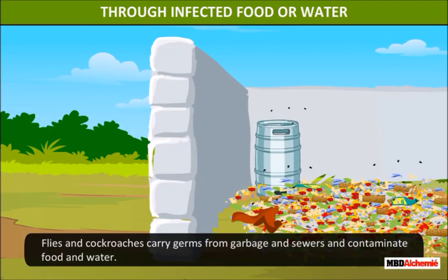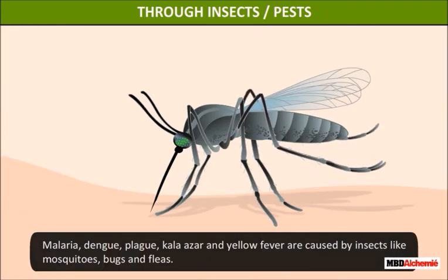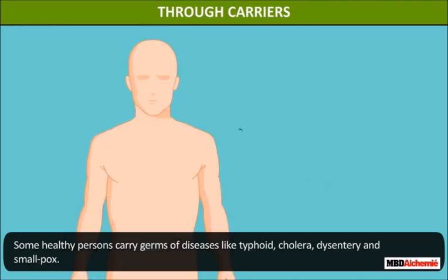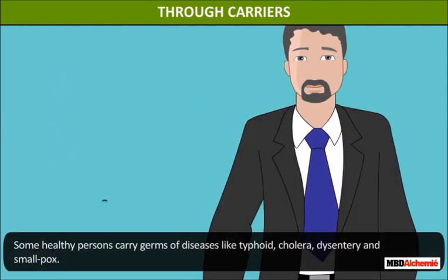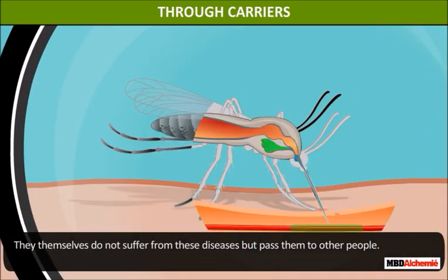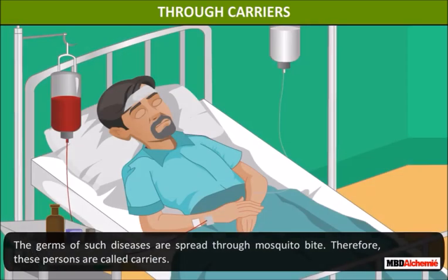Through insects or pests: malaria, dengue, plague, kala-azar, and yellow fever are caused by insects like mosquitoes, bugs, and fleas. Through carriers: some healthy persons carry germs of diseases like typhoid, cholera, dysentery, and smallpox. They themselves do not suffer from these diseases but pass them to other people. Such persons are called carriers.